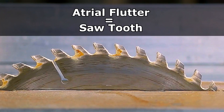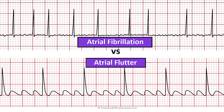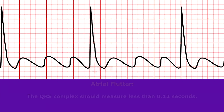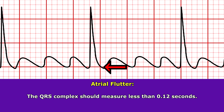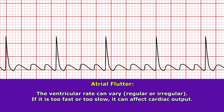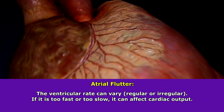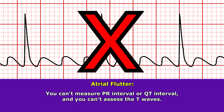This sawtooth appearance is one of the key points in helping you discern atrial flutter from atrial fibrillation. When you look at the QRS complex, it should measure less than 0.12 seconds. The QRS complex tells us about the ventricular rate, which can vary — it can be regular or irregular, but we don't want it to be too fast or too slow, as this will affect how the heart pumps out blood, hence our cardiac output. In this rhythm, you cannot measure the PR interval, the QT interval, or assess the T waves.